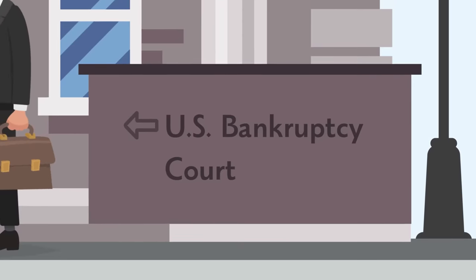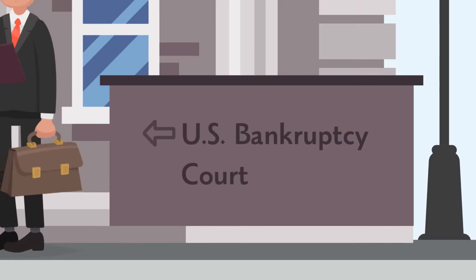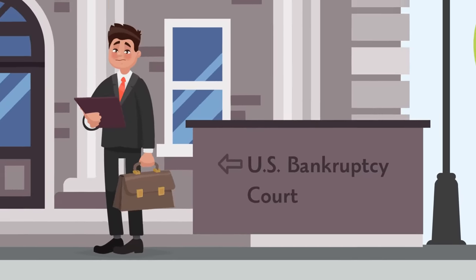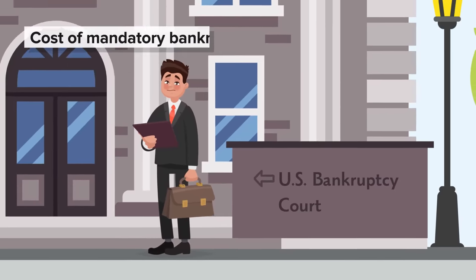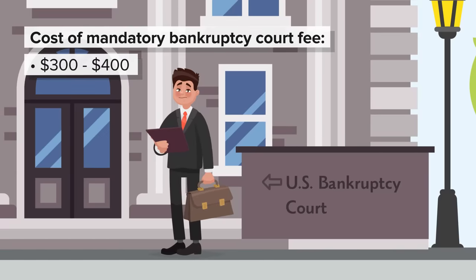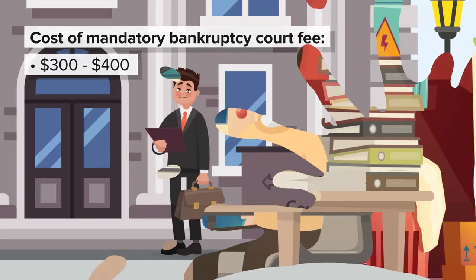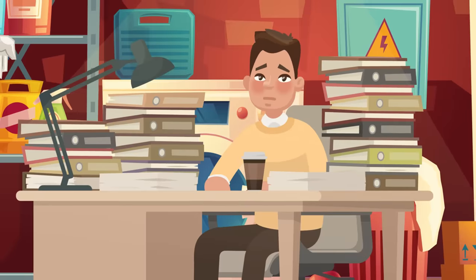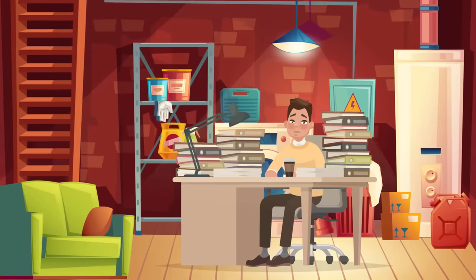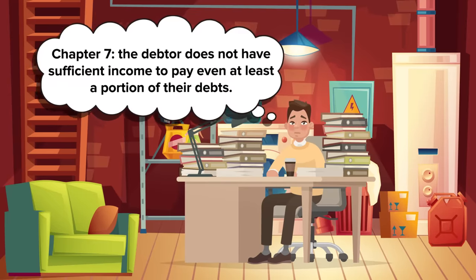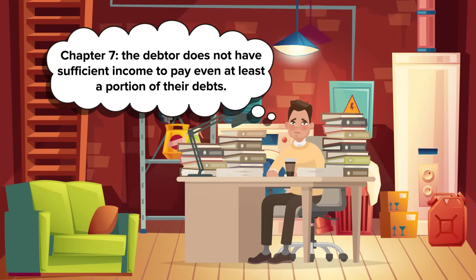James' second step is to file bankruptcy forms with the court and pay fees associated with the cost of his case. In some instances, debtors can request a fee waiver. Generally, mandatory bankruptcy court fees cost between $300 to $400 US. The bankruptcy paperwork James has to fill out is pretty extensive. It includes forms listing financial information, assets, income, expenses, and property exemptions.